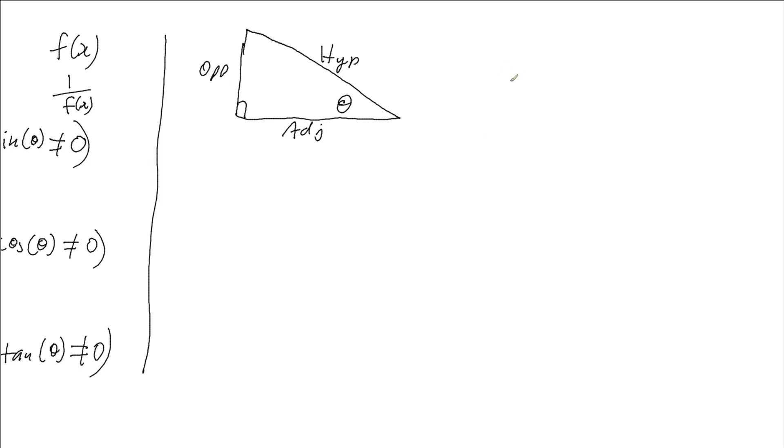If I think about one of my reciprocal trig functions, let's start off with cosec. Cosec of theta we know is defined as 1 over sine. So let's have a look at what happens when we look at sine theta. Sine theta we know is opposite over hypotenuse. So that means that if cosec is 1 over sine theta, it must be the reciprocal of this fraction. And the reciprocal of a fraction is the fraction flipped upside down, so we would have hypotenuse over opposite.